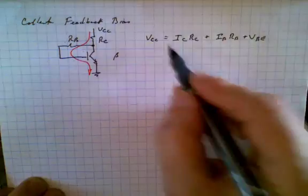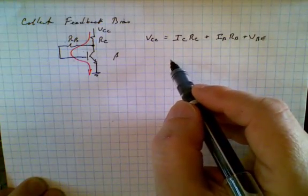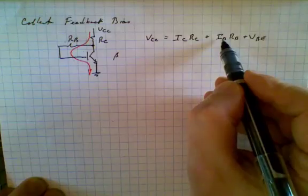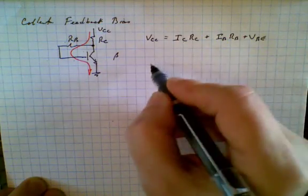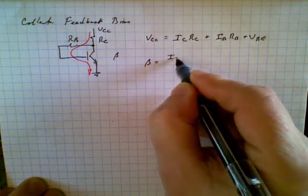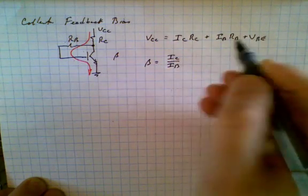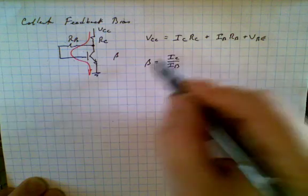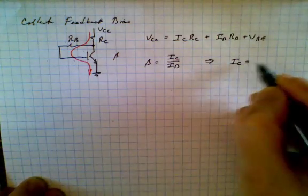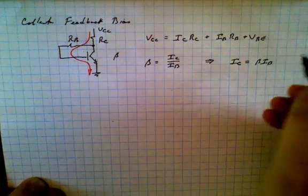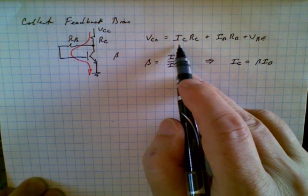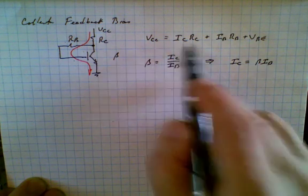Now we have to simplify this equation, and so the thing we'd like to do is get rid of this term Ic. Now the relationship between Ib and Ic is beta. Beta, you recall, is equal to Ic divided by Ib. And so we're going to rearrange these terms so that Ic is equal to beta Ib. Now what we can do is substitute this expression and then solve for Ib.